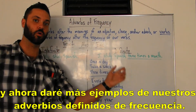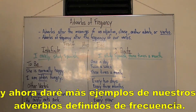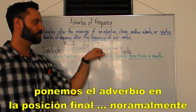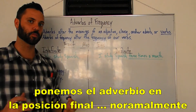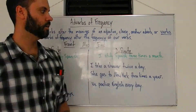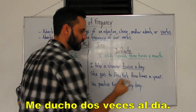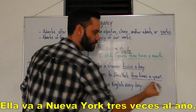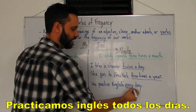And now I will give some more examples of our definite adverb of frequency. With our definite adverb of frequency, we put the adverb in the end position — normally. For example: I take a shower twice a day; she goes to New York three times a year; we practice English every day.